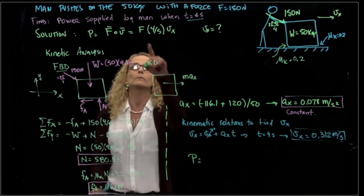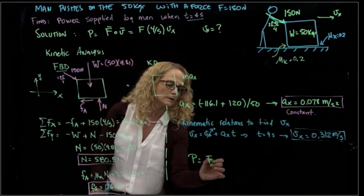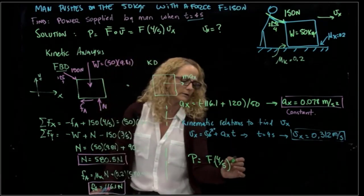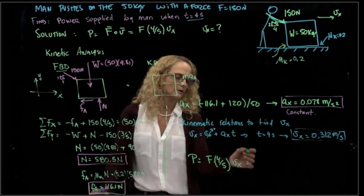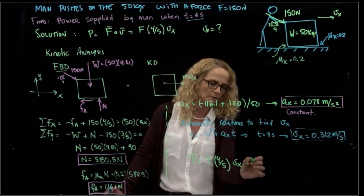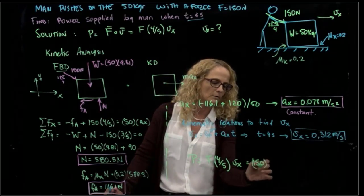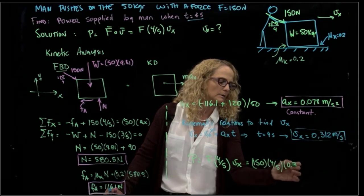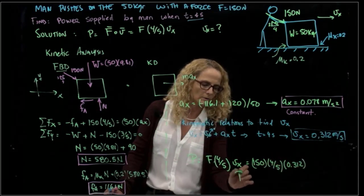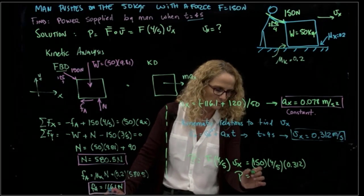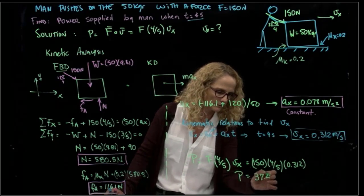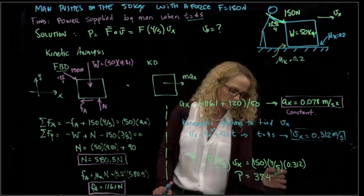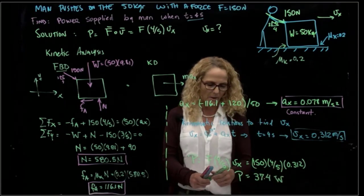This is our velocity, and the power was force times 4/5, because it is only in x direction times the velocity. The force is 150 times 4/5 times that velocity. Therefore, the power is equal to 37.4. You know that Newton meters over second is watts. That's the units of power. Very important to always care about the units that you are using.